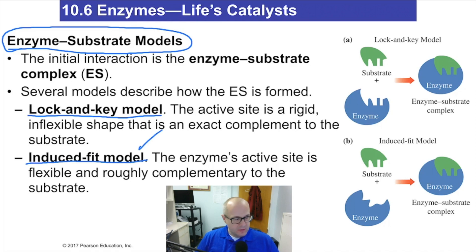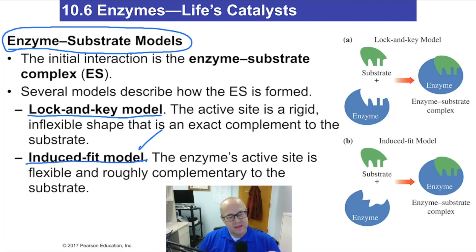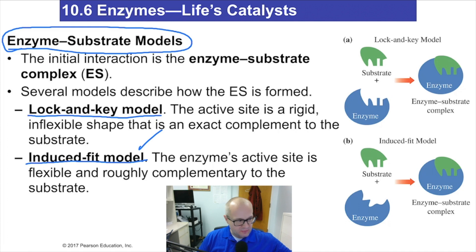In the induced fit model, the active site is flexible enough and will move around depending on the substrate. More than one key can open this door because the lock is able to bend or mold itself to the substrate. It's also known as the less rigid model — lock and key is very rigid, while induced fit is malleable. They accept a wider variety of substrates and will actually reform themselves to accommodate that substrate.